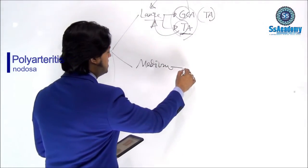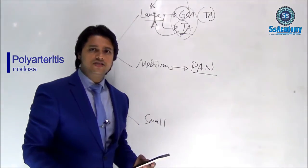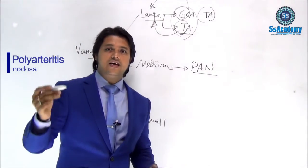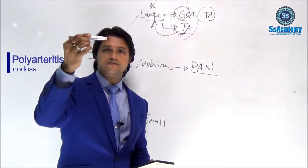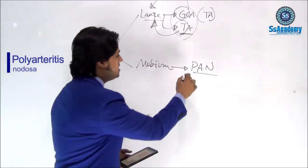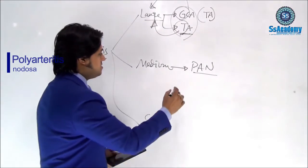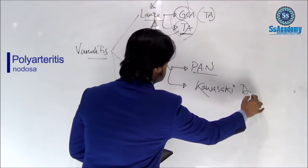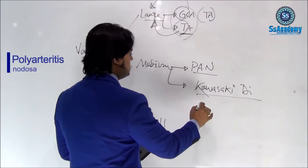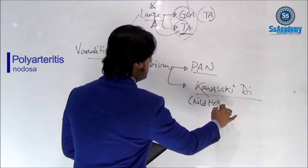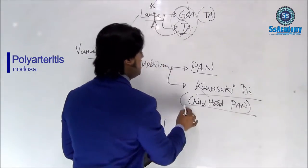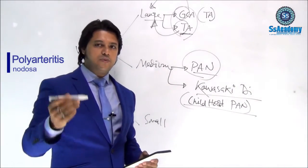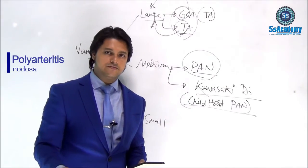Medium vessel vasculitis is PAN — polyarteritis nodosa. I have a pen in my hand; this is a medium-sized pen. So 'I write with the medium-sized pen' helps us remember that PAN is a medium vessel vasculitis. Another medium vessel vasculitis is Kawasaki disease, which is essentially the childhood PAN. The single word 'pen' helps remember medium vessel vasculitis.